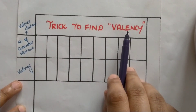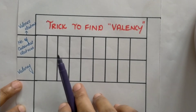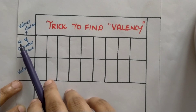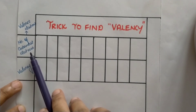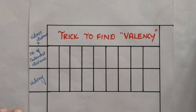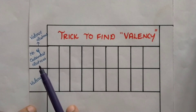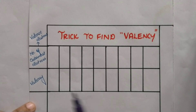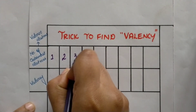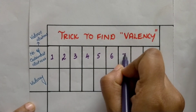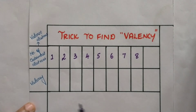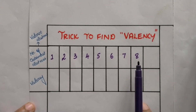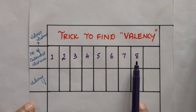Before we identify the valency, let us first write down the possible number of outermost electrons an element can occupy, which are otherwise known as valence electrons. For a given element, the number of valence electrons can vary from 1 to 8. We start from 1 because for an atom to be stable, the number of outermost electrons must be 8 — that is, it must satisfy the octet rule. That is why we take numbers from only 1 to 8.